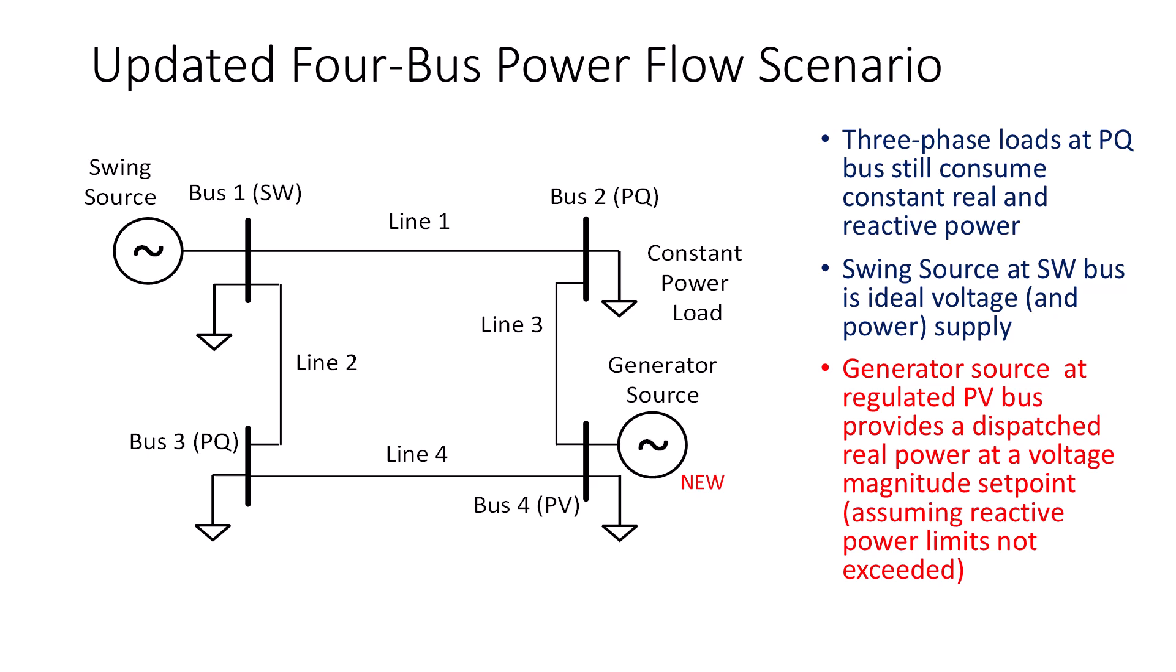The next step in developing this PowerFlow program is to add the capability of modeling generation sources other than the swing bus. A generation source is assumed to be dispatched at a fixed real power injection. The generation source also maintains a constant bus voltage by adjusting its reactive power injection. This generation bus will be referred to in the data set as a PV bus. Note that load buses are PQ buses, and the swing bus is denoted by SW. In this presentation, we will use the 4-Bus system shown here for our coding examples. However, in the final code, we will be able to handle larger bus systems.